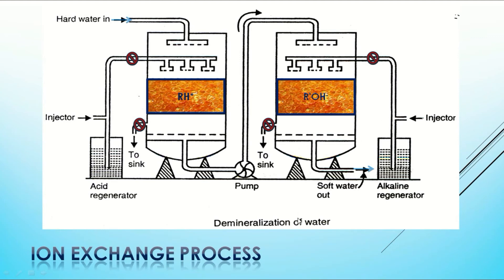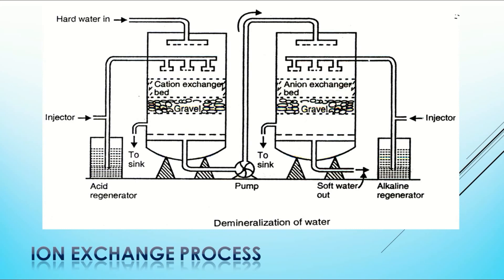When we pass a large quantity of water through this system, we are replacing H+ ions and OH- ions with cations and anions from water. So eventually, after passing a large quantity of water, this cation exchange bed and anion exchange bed will get exhausted, and in that case we will not get soft water as the outlet. So we need to stop the demineralizing process and carry out the second stage, which is regeneration of the exhausted beds.